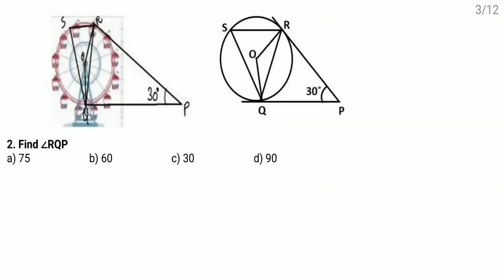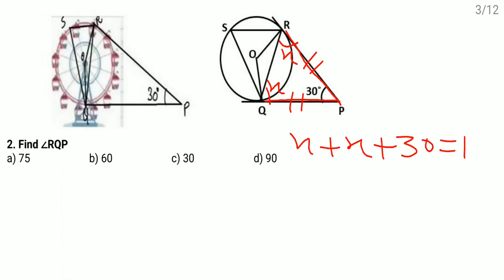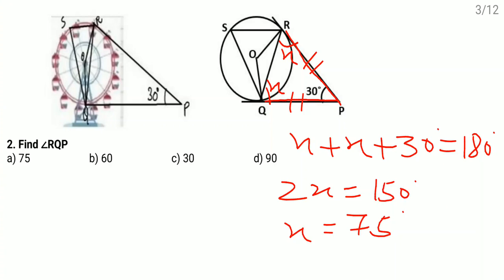Second question: find angle RQP. This one is the tangent drawn from the exterior point. Both tangents are equal in length, therefore this angle and this angle are equal. Let us consider them as x and x. So x plus x plus 30 equals 180 degrees. Therefore 2x equals 150, and x equals 75. So the measurement of angle RQP is 75 degrees — option A is correct.